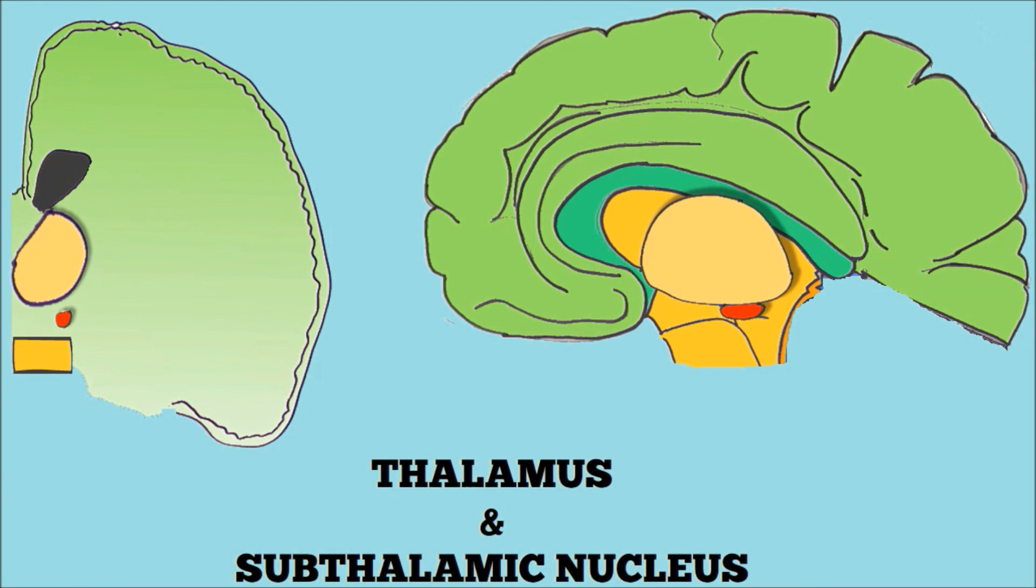Next we have the thalamus and beneath it the subthalamic nucleus. The subthalamic nucleus is a rather complicated structure, but it's thought that it may have a role in action selection. Damage to the subthalamic nucleus causes hemiballismus, which is characterized by violent movements of the arm and leg on one side of the body.